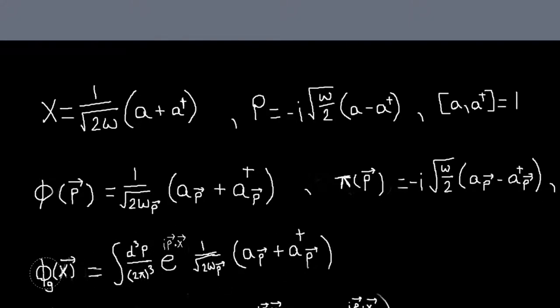And I've labeled this phi_g for phi guess, as in, based on everything we've done, you would kind of guess that this would be what phi(x) would be. We just plugged in our expression for phi_p in this Fourier transform here. And basically it's wrong.